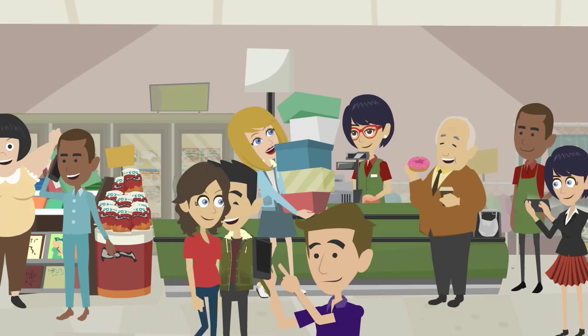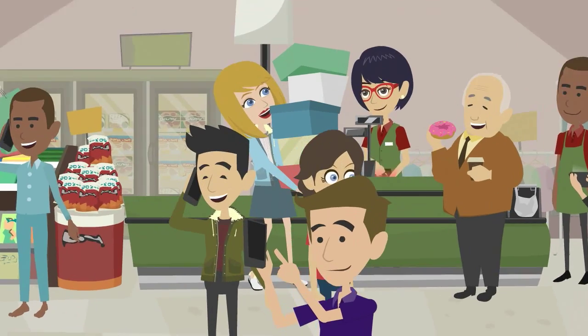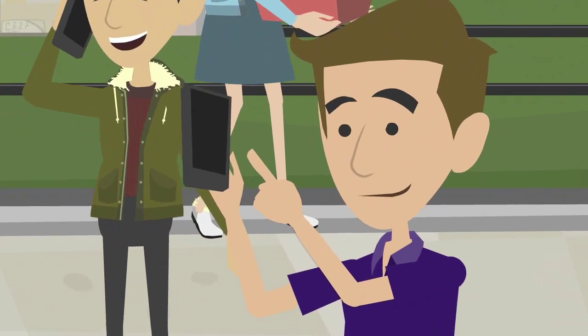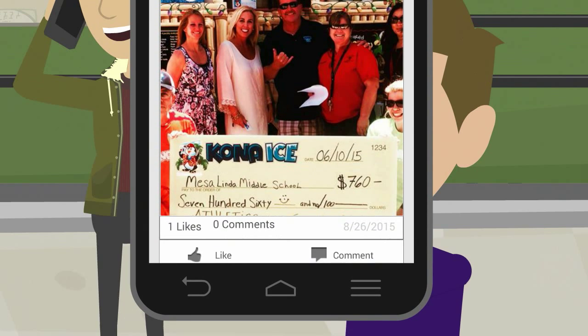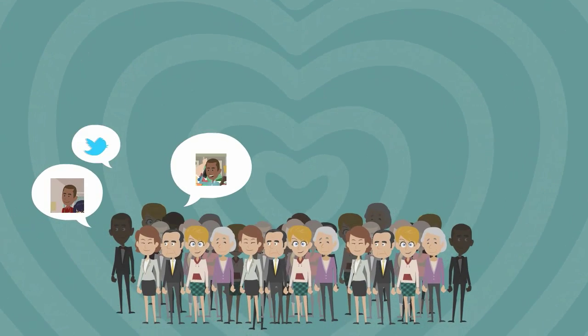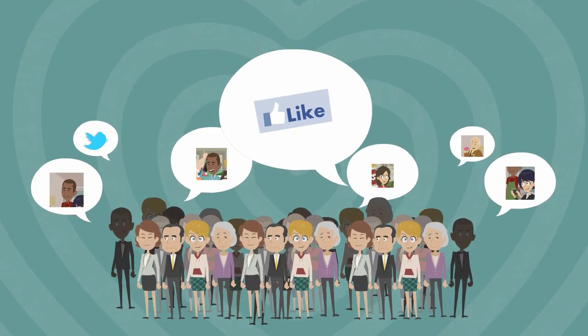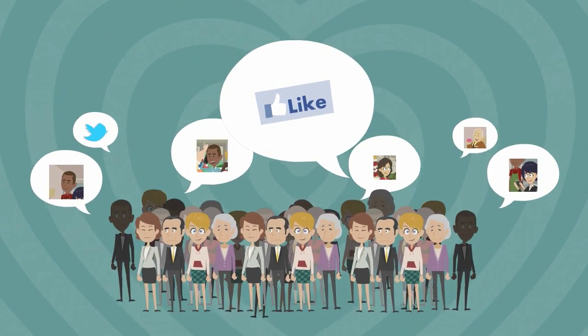When members attend Bob's event, they can comment on and like each other's posts in the Members Only community feed and spread the word to their friends, reaching twice the audience that Bob could reach on his own.